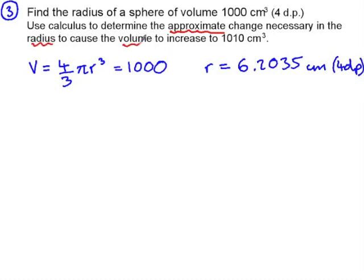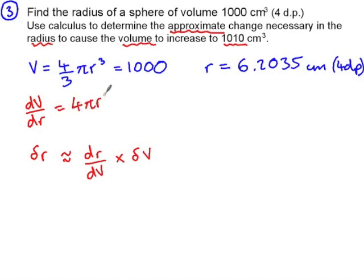Now we're asked to determine the approximate change necessary in the radius to cause the volume to increase to 1,010 cubic centimetres. So if we want an approximate change in radius that's delta r, that's going to be approximately equal to dr by dv multiplied by delta v. Now dv by dr is 4 pi r squared, so dr by dv is the reciprocal of that, 1 over 4 pi r squared